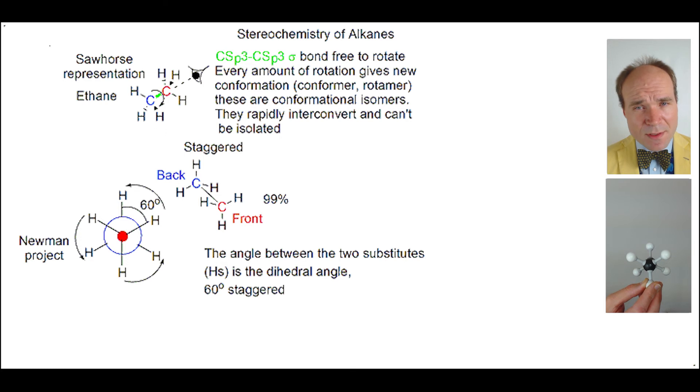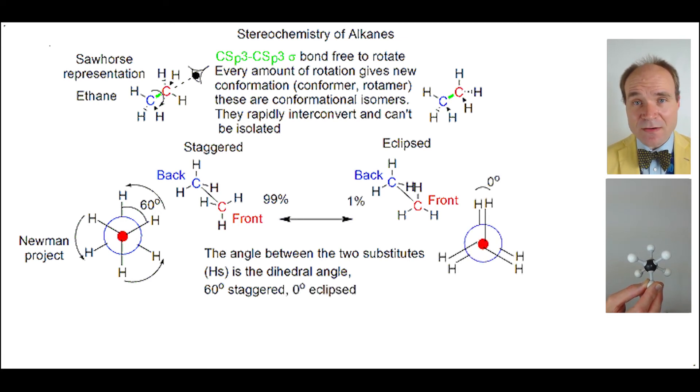But while we're thinking about it, how much should we rotate this theoretical ethane? Well, it might be interesting to rotate it by 60 degrees. Let's see what happens. Now, the dihedral angle is zero. And when you have a dihedral angle of zero, it's called eclipsed.